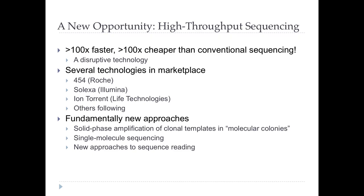There are various technologies in the marketplace, and I don't think it's the time to give a general overview of all of them. Here are some of them: the 454 approach, the Illumina approach — used to be called Solexa — and I'm going to say a little bit about Ion Torrent later, and there are others. These rely on fundamentally new approaches. Instead of growing up colonies, you create a clonal template in a molecular colony — doing things with chemistry rather than biology. There are also technologies where you're doing single molecule sequencing, with new approaches to sequence reading.